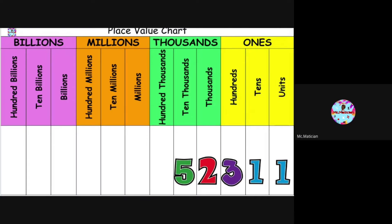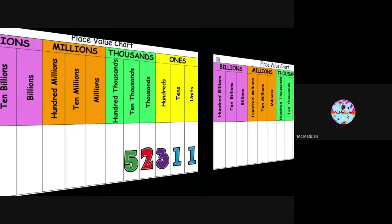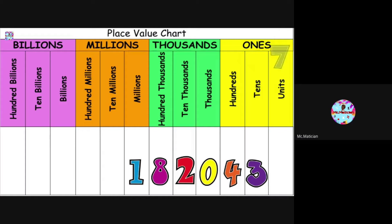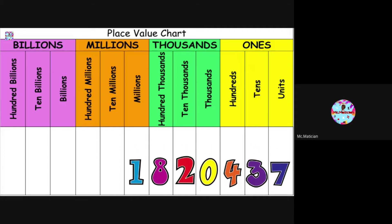52,311 — what's the value of the 5? Did you say 50,000? Next: 1,820,437. What's the value of the 1? Did you guess a million? What about the 8? Did you guess 800,000? And the zero? That's correct — it's just zero. There are no thousands.